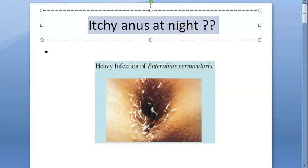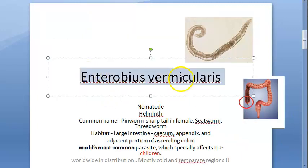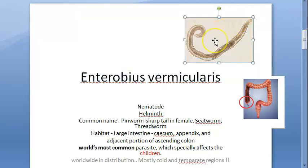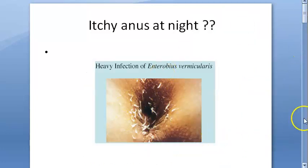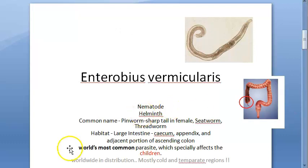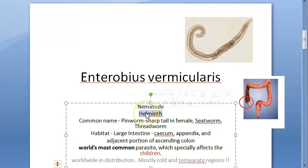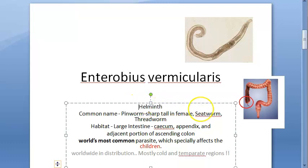Enterobius vermicularis is a worm called a pinworm or threadworm — these are fitting names because it has a very thin, pointed tail like a pin, or it can look like a white thread. You can see in the image that they look like threads. It comes under helminths, specifically nematodes — and under intestinal nematodes.